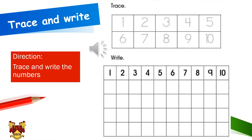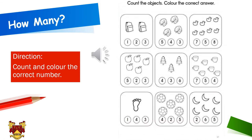You can use pencils or any other colored pencil. Once you are done tracing the numbers, you will practice writing the numbers in the boxes given below. In this page, you are going to count the number of objects and then color the correct answer.